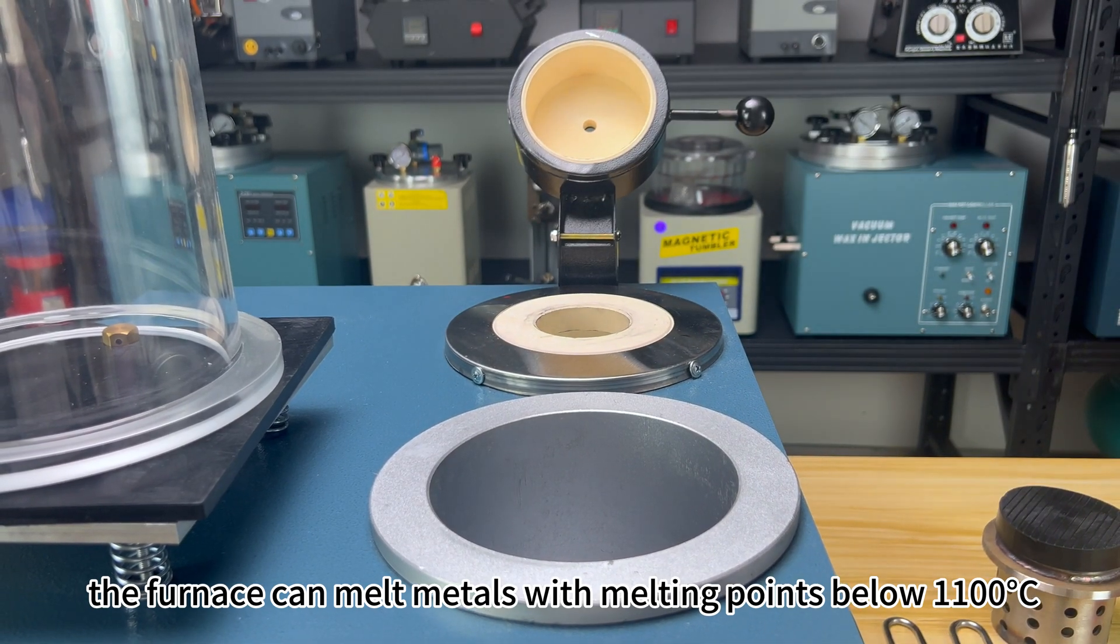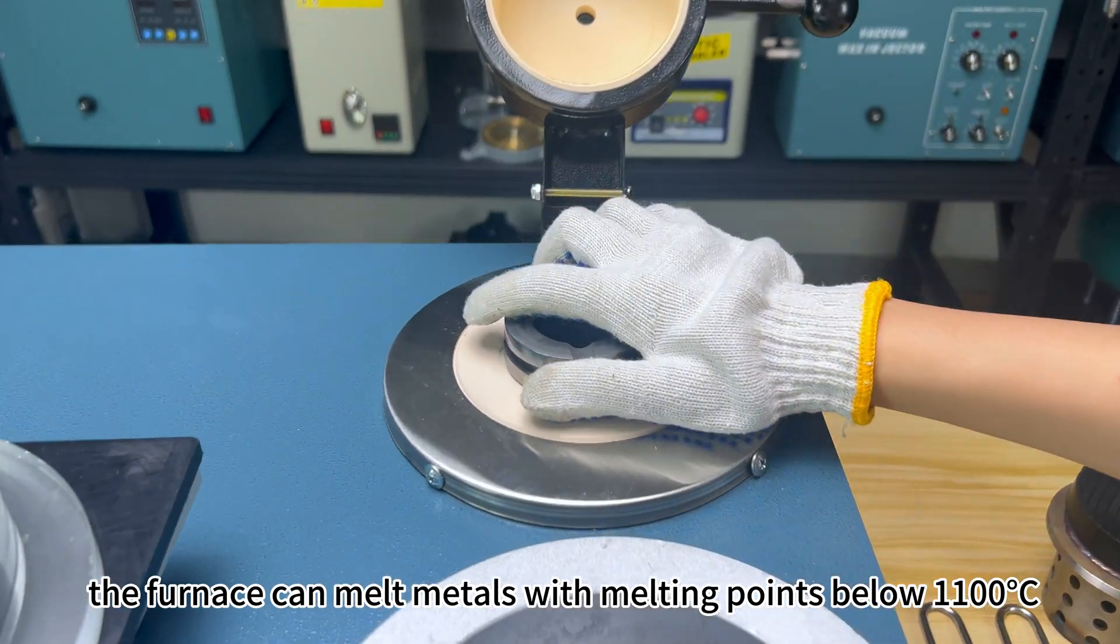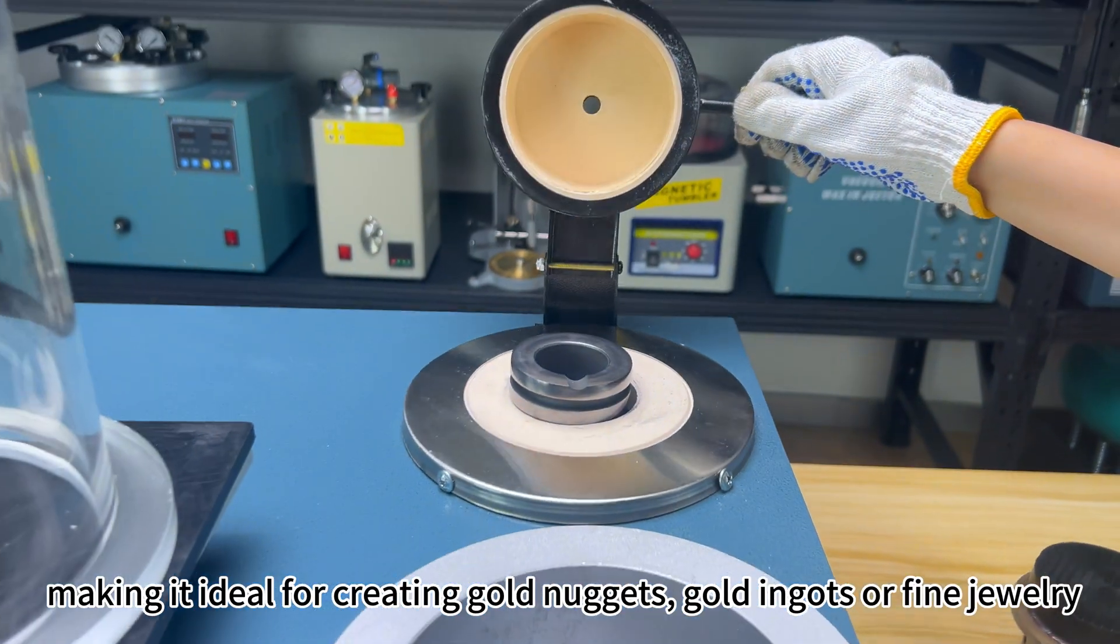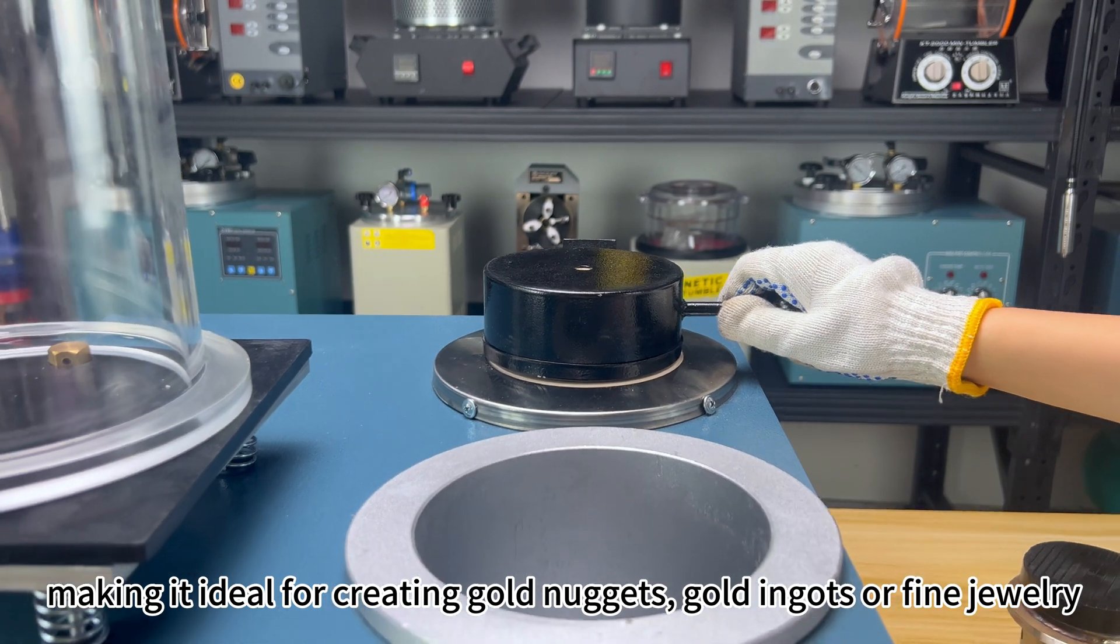the furnace can melt metals with melting points below 1100 degrees in just 48 minutes, making it ideal for creating gold nuggets, gold ingots, or fine jewelry.